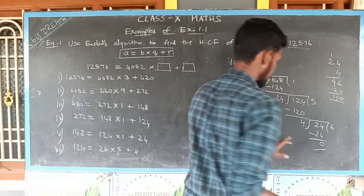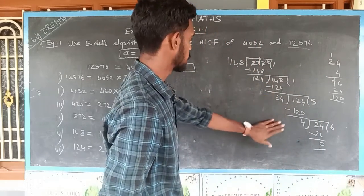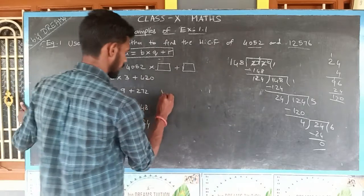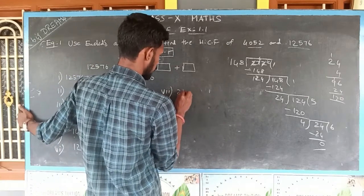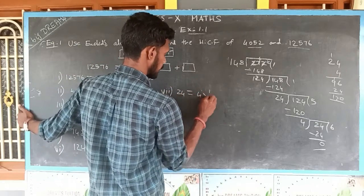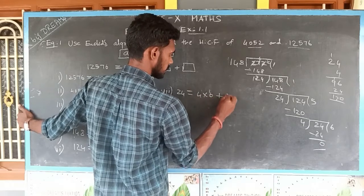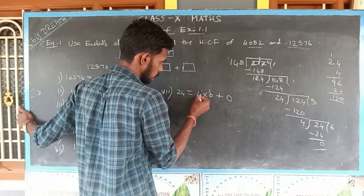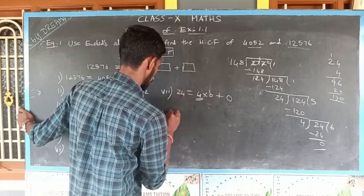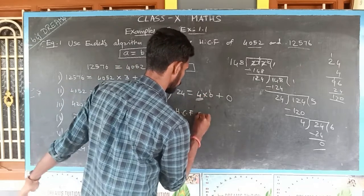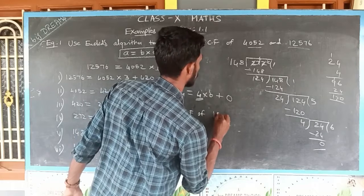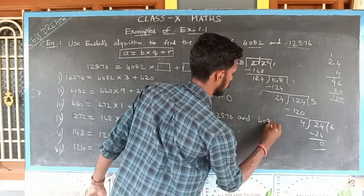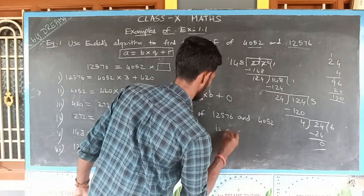6 × 4 = 24, so the remainder becomes 0 and we stop the procedure. Finally, I can write 24 = 4 × 6 + 0. The last obtained divisor value is 4. So I can conclude: HCF of 12576 and 4052 is 4.